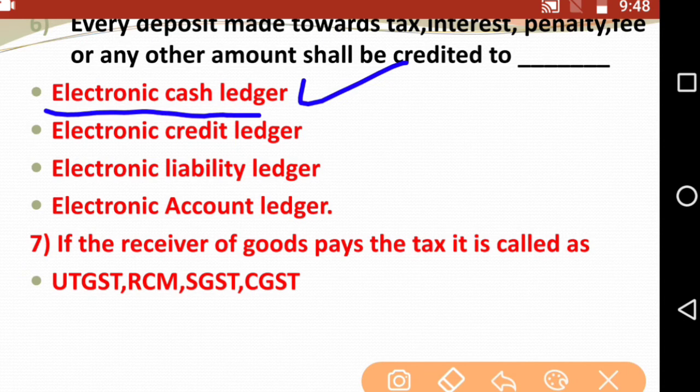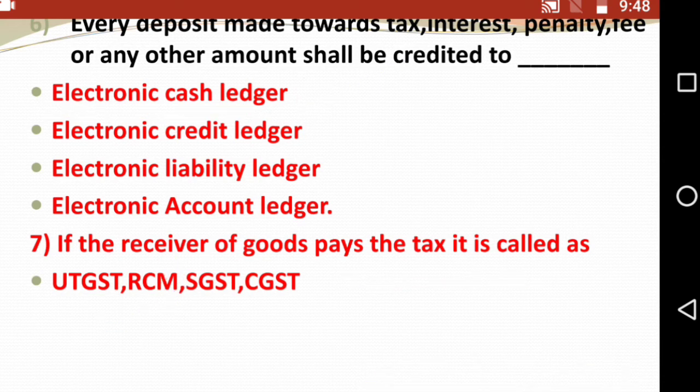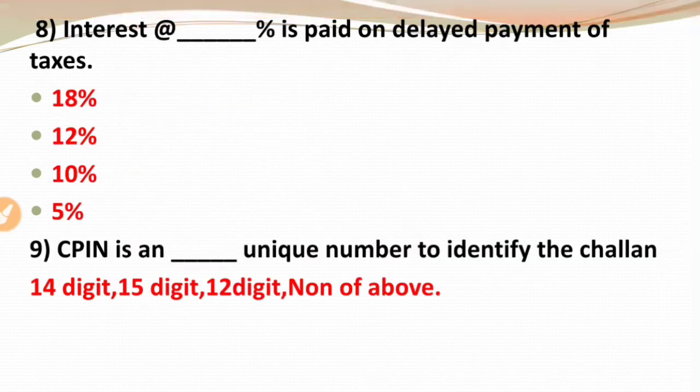Question seven: If the receiver of goods pays the tax, it is called — UTGST, RCM, SGST, or CGST? Usually the supplier pays the tax and the input tax credit passes on. But if the receiver of goods pays the tax, it is called reverse charge mechanism, or RCM. So the right option is RCM.